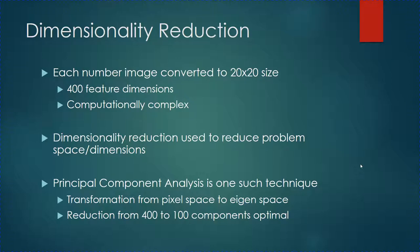There are several algorithms used to achieve dimensionality reduction; Principal Component Analysis is one such algorithm. PCA involves the transformation of digits from pixel space to eigen space. These eigenvectors are arranged in decreasing order of their variance, and only the initial few are chosen, since the maximum energy is stored in those initial eigenvectors. By choosing fewer than 400 eigenvectors, the feature dimensions and computational space can be reduced.